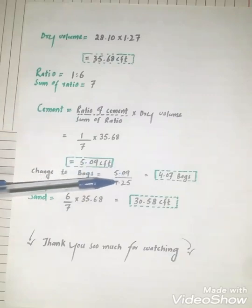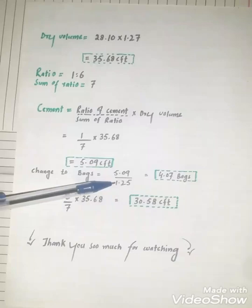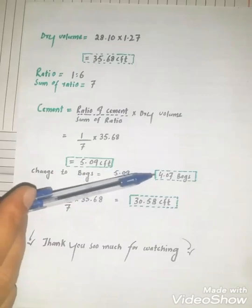Now change to bags: 5.09 divided by 1.25. What is 1.25? This is the volume of cement bag in cubic feet. Cement required: 4.07 bags.